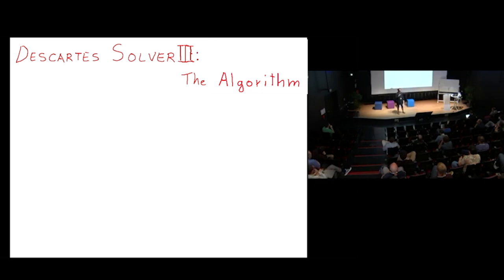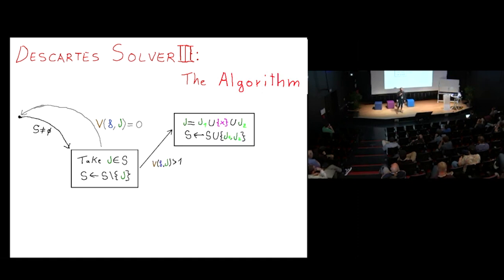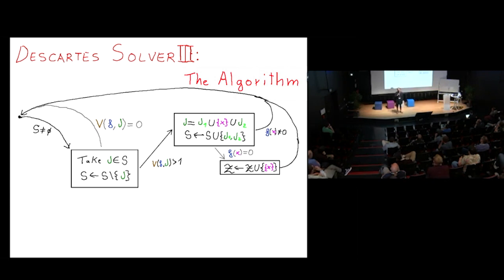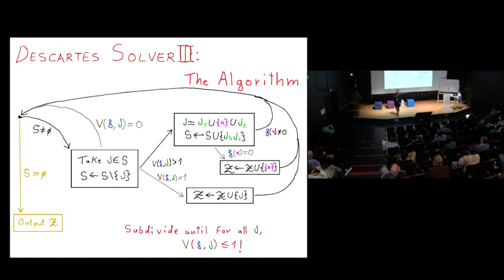The algorithm is quite simple. Start with a subdivision containing the initial interval. Take each interval: if the sign variation is zero, move on. If it's bigger than one, divide the interval in two, check if the midpoint is a zero, and add it to the list if so. If the variation is one, add the interval to the isolating intervals list. Continue until the set S is empty, then output the isolating intervals.